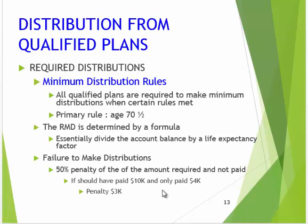There is a minimum distribution rule. When you turn 70 and a half, there's something referred to as a required minimum distribution. You have to pull this money out once you get to 70 and a half with a traditional IRA vehicle. The failure to do that is a 50% penalty — 50% of the amount that's required and not paid.